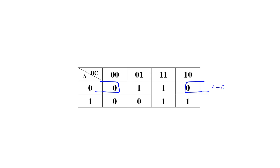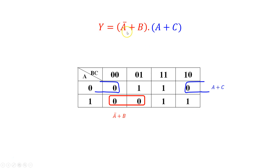The other largest group of zeros is at the bottom. Grouping those two cells, we see A is equal to 1, so we write that as not A. We see B is equal to zero. Since we're writing max terms, we write not A or B. So the simplified product of sums is: Y equals (not A or B) ANDed with (A or C).